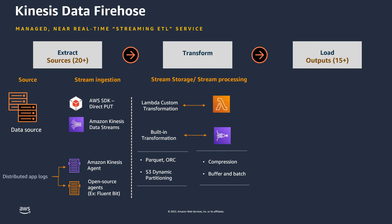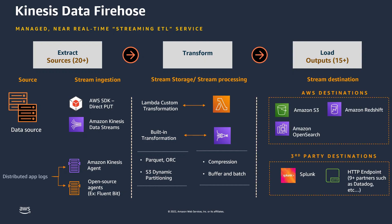Kinesis Data Firehose also supports other capabilities such as buffering, compression, and encryption of data. Stream destination options supported by Kinesis Data Firehose include Amazon S3, Amazon Redshift, Amazon OpenSearch, and Amazon API Gateway, as well as many third-party destinations.